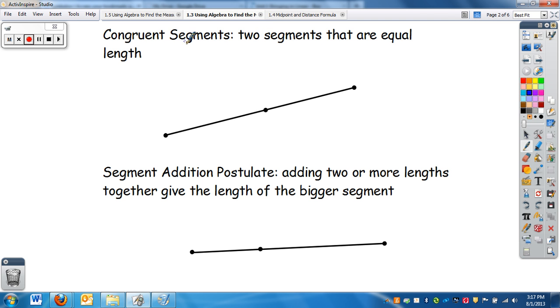So in class you've been looking at the vocab congruent. Remember congruent are just two segments that are equal length. So here I have a segment so I can give these points some names A, B, and C.